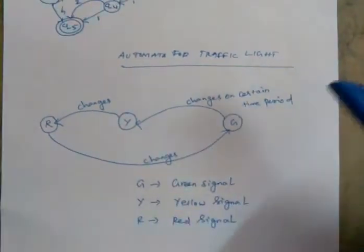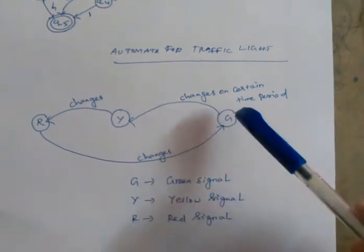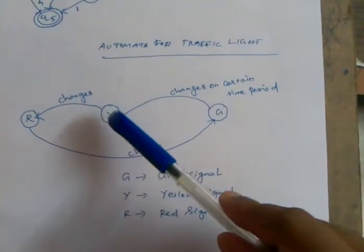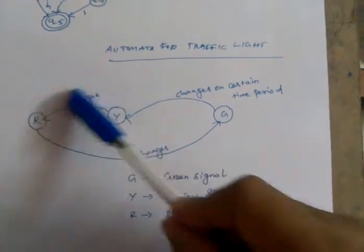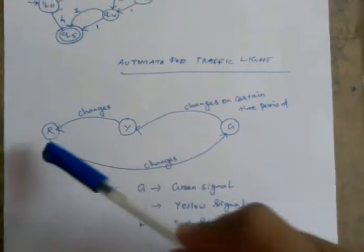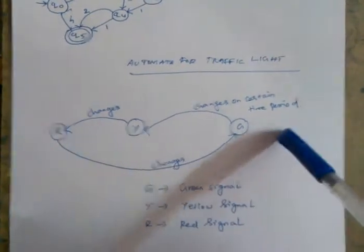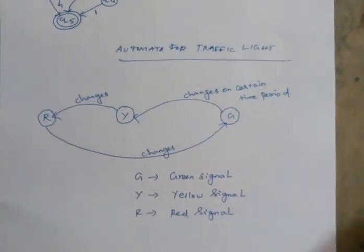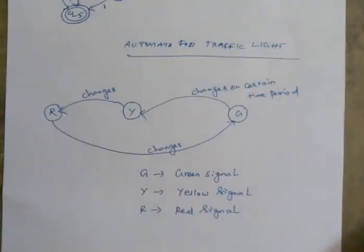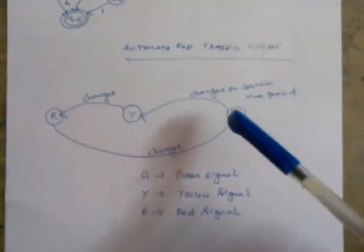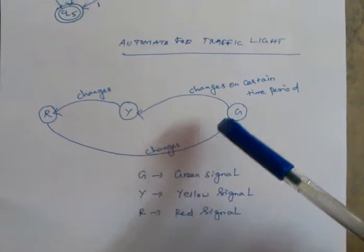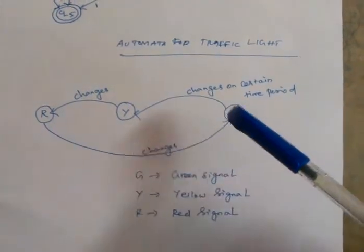The number is automatic. At a particular time, the green signal changes to a yellow signal. The red signal is on for a certain time period, and the rotation continues on a certain time period. The traffic light can be easily expressed in a mathematical model.